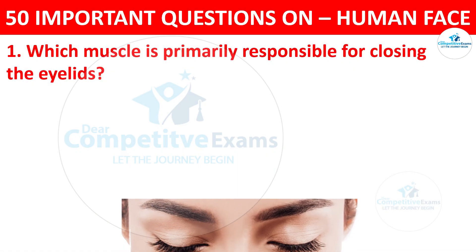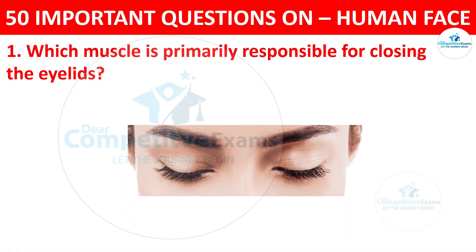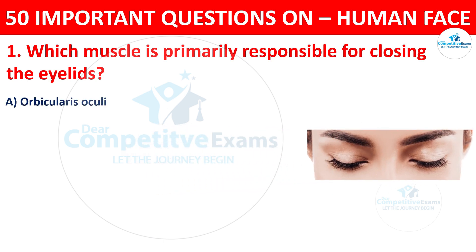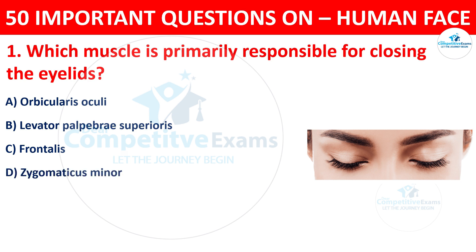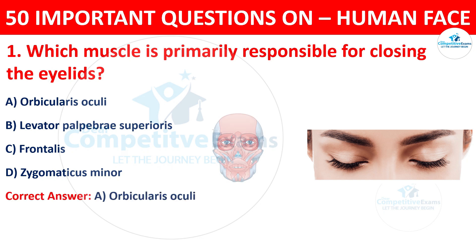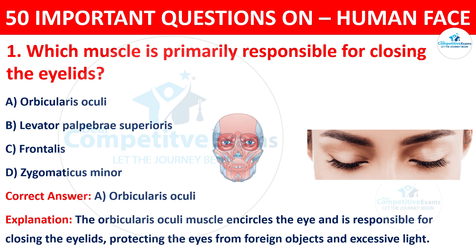Which muscle is primarily responsible for closing the eyelids? The options are orbicularis oculi, levator palpebrae superioris, frontalis, or zygomaticus minor. The correct answer is A, orbicularis oculi. The orbicularis oculi muscle encircles the eye and is responsible for closing the eyelids, protecting the eyes from foreign objects and excessive light.